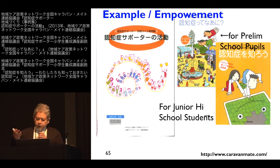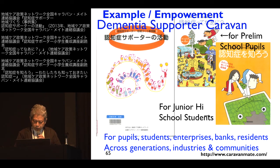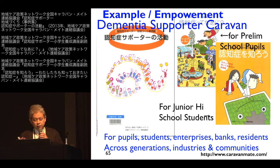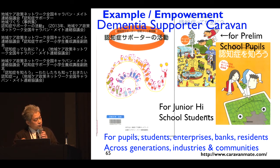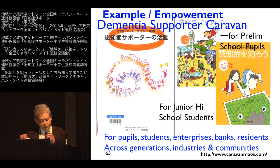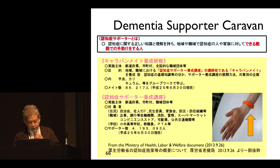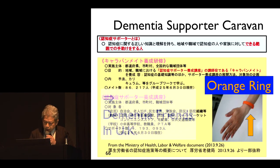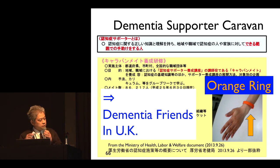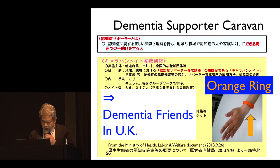Another example is the dementia supporter program. In Japan, we have a dementia supporter caravan system that teaches people how to live with a person with dementia. There are textbooks for pupils, students, enterprises, banks, and residents across generations, industries, and communities. This movement has been very effective. If you become a dementia supporter, you receive an orange ring. This movement is broadly recognized — the UK adopted this system and calls it dementia friends; in Japan we call it dementia supporter.